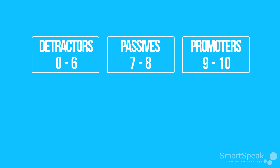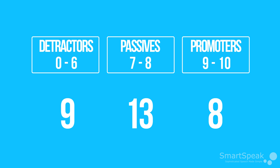In our example, we had 9 people that rated between 0 and 6, so that's 9 detractors. Next, we have 13 people that rated between a 7 and 8 — our passives. Lastly, we had 8 people that rated us as either a 9 or 10 — our promoters.